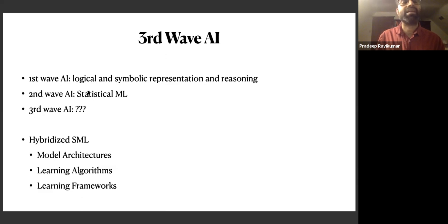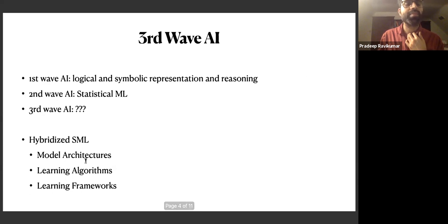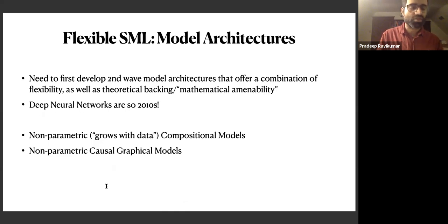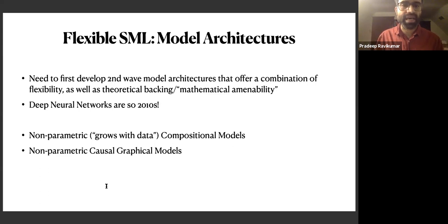But what we need is third wave AI that combines both of these elements. So what we are working on is really tackling this along multiple dimensions of model architectures, learning algorithms, and learning frameworks. In particular, with model architectures, what we are doing is kind of throwing out the deep neural networks — which are essentially the state-of-the-art model architectures — but taking the key underlying mathematical insight that underlies those and bootstrapping those off of things that we understand better. You need this kind of backbone that you can understand better so that you can then bootstrap off of that for third wave AI architectures.